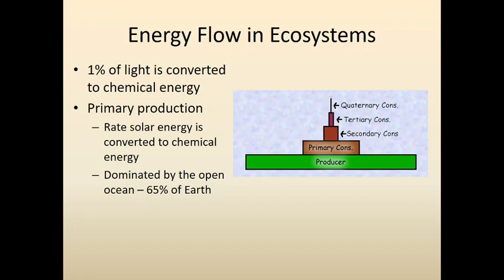A bunch of sunlight and solar energy is hitting the earth, but only about 1% of that light is actually converted to chemical energy. There's so much energy hitting the earth that doesn't get used directly by plants. We call the rate at which solar energy is converted to chemical energy primary production. Looking across the world, most primary production is done in the ocean by tiny single-celled algae, while the other 35% is plants doing photosynthesis on land.